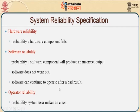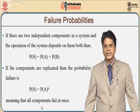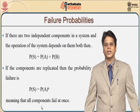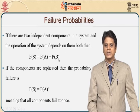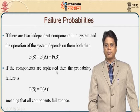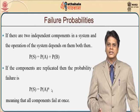Software can continue to operate even after a bad result. With regard to the system, we have operator reliability, where we check the probability of a system user making an error. To understand failure probabilities — these are just probabilities of failure free operations — if we have two independent components associated with a system, the operation of the system depends purely on both: the probability of failure happening at system A and the probability of failure happening at system B makes up the probability of the system. If the components are replicated, the probability of failure is to the power of n, meaning it increases exponentially.